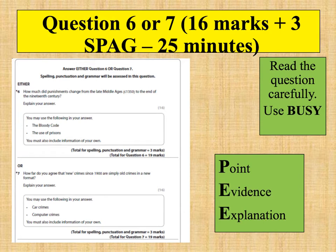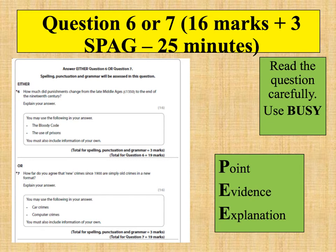Here are a couple of examples. Question 6: 'How much did punishments change from the late Middle Ages to the end of the 19th century?' You need examples of change in punishments but also examples of how punishments stayed the same, finishing with a conclusion — probably about three paragraphs. Question 7 is a 'how far do you agree' question, so you'd have a paragraph agreeing, a paragraph disagreeing, then a conclusion. Structure your essays carefully, link back to the question, and include analysis and evaluation to pick up the explanation marks.